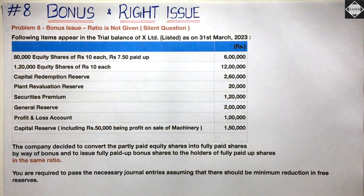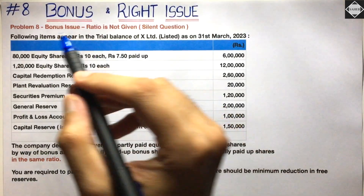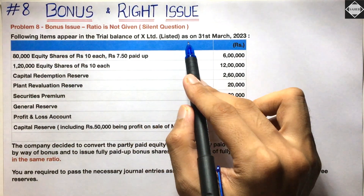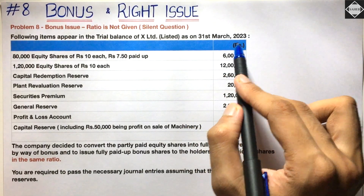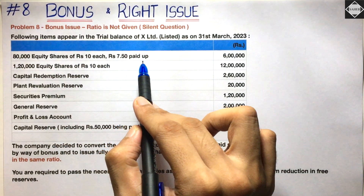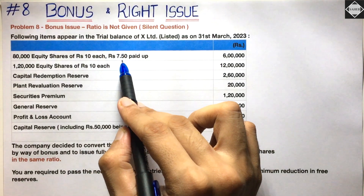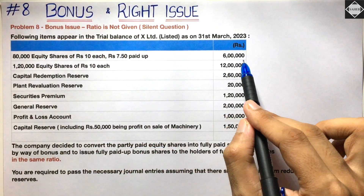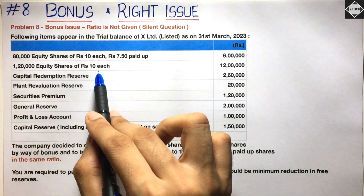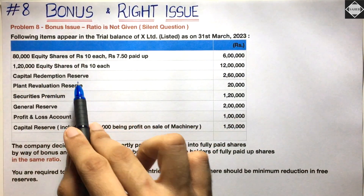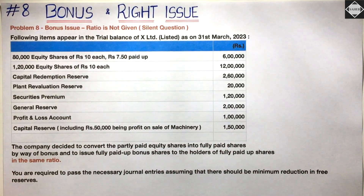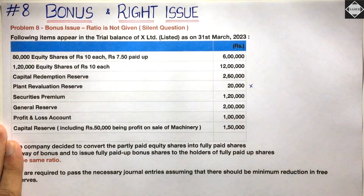Let's first read the question. Following items appear in the trial balance of X Limited as on 31st March 2023. We have 80,000 equity shares of rupees 10 each, rupees 7.50 paid up — so face value is 10 and paid up value is 7.5, giving 6 lakh. Then another class: 1,20,000 equity shares of rupees 10 each — 12 lakhs. We also have CRR of 2 lakh 60,000, and plant revaluation reserve of 20,000 — which we cannot use directly.